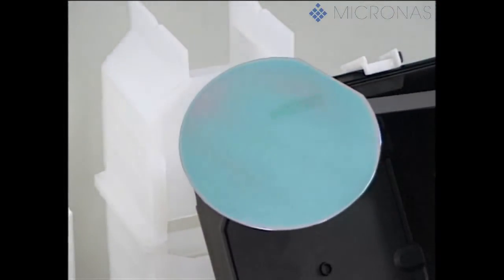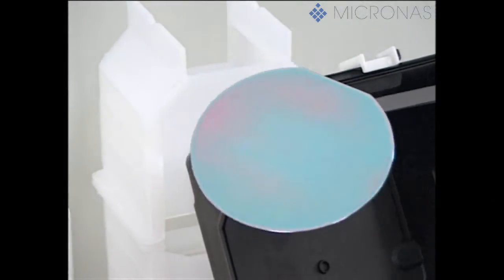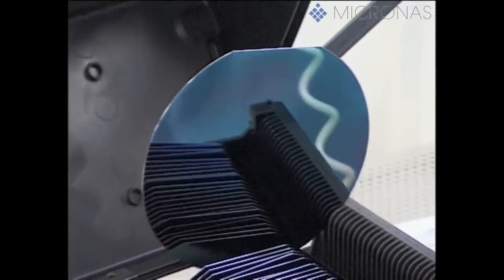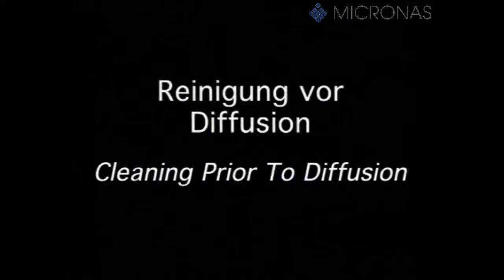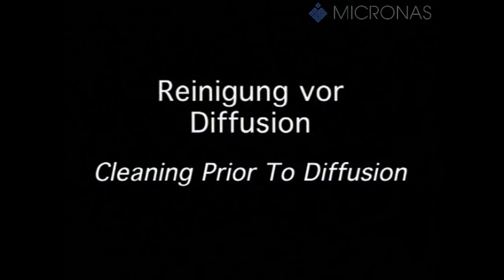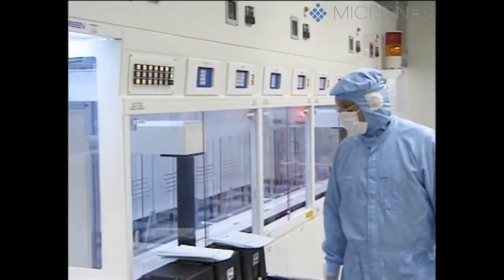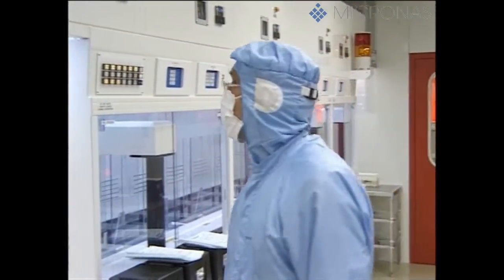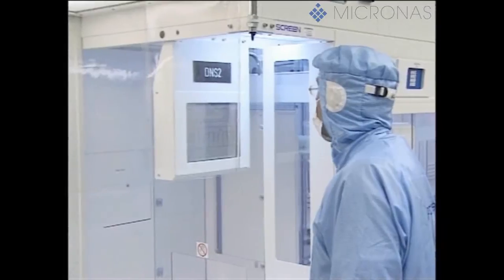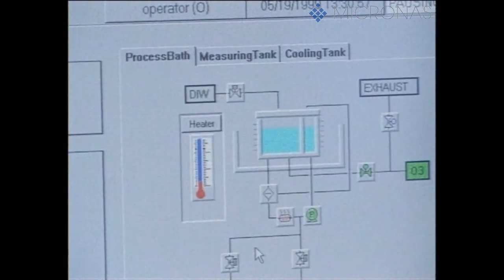The starting material used in chip production is thin slices of silicon with an extremely high level of purity, which are known by the technical term of wafers. Although the wafers are extremely clean at each stage of the production process, cleaning steps are run through at many different points of the process. This is because any remaining foreign substances could impair the quality of the products, especially during oxidation and diffusion processes.